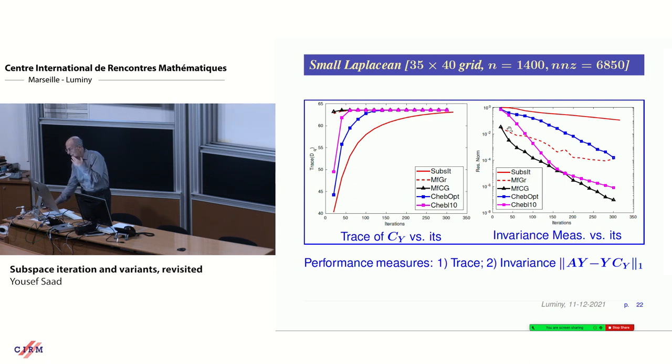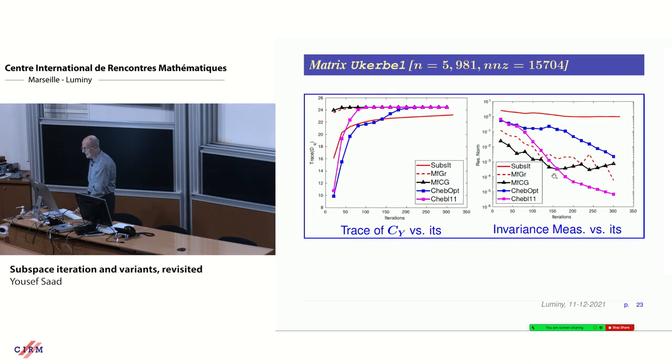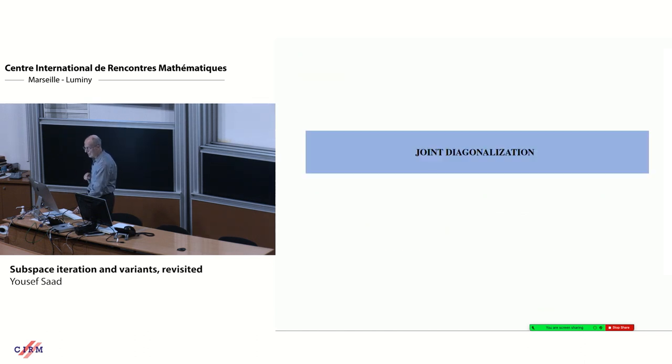That's a different example with the matrix from PARSEC. Very similar picture. In this case, Chebyshev actually overtakes conjugate gradient at the end. So that's really all I had to say about this. I have two more minutes. We're going to say very quickly something about joint diagonalization.